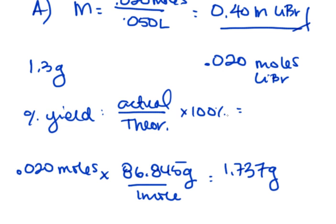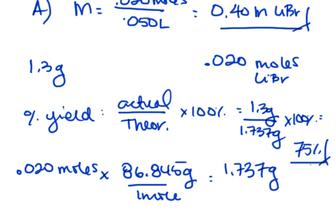So then, just plugging that into our formula here, 1.3 grams over 1.737 grams times 100, this gives us 75% yield. And so you can find molarity and the percent yield of the product in this problem, and you're done.